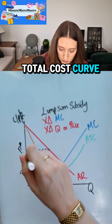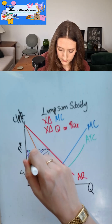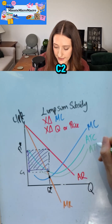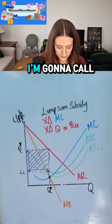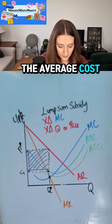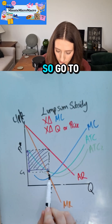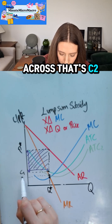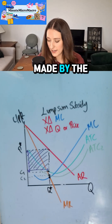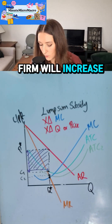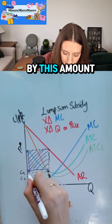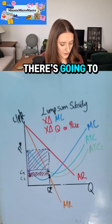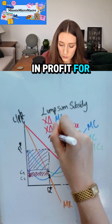So we'll draw a new average total cost curve — I'm going to call that ATC2. This means that the average cost would decrease, so going to the point where it intersects, I'm going to read across as c2. The profit made by the firm will increase by this amount, so the only difference is there's going to be an increase in profit for the firm.